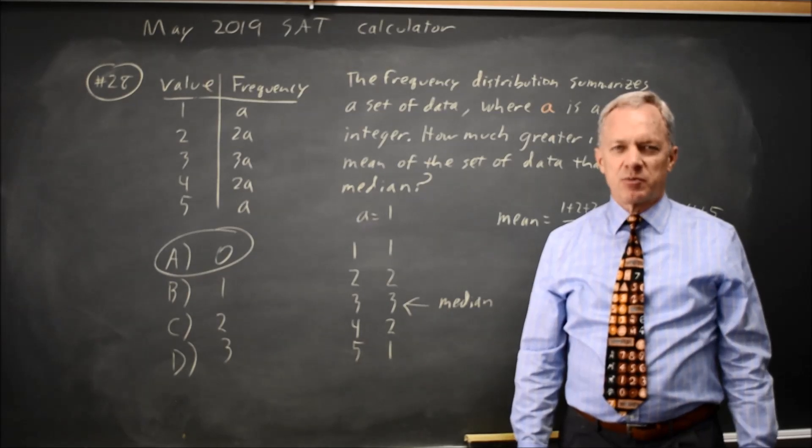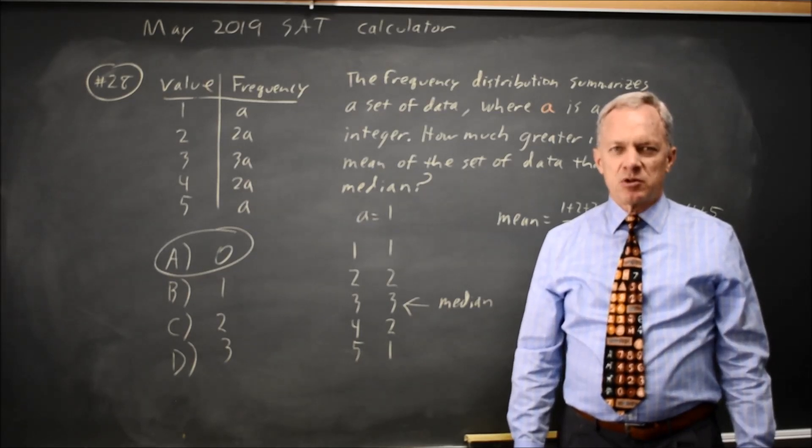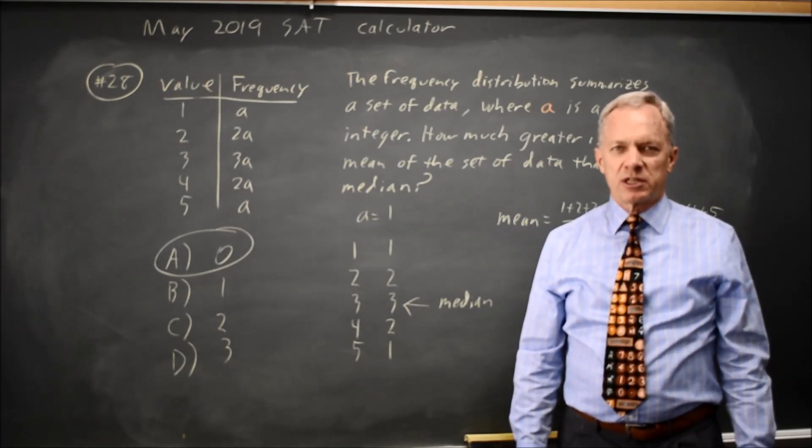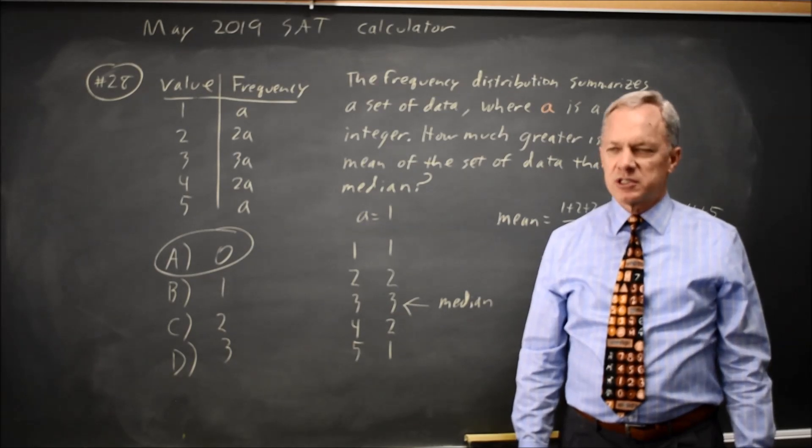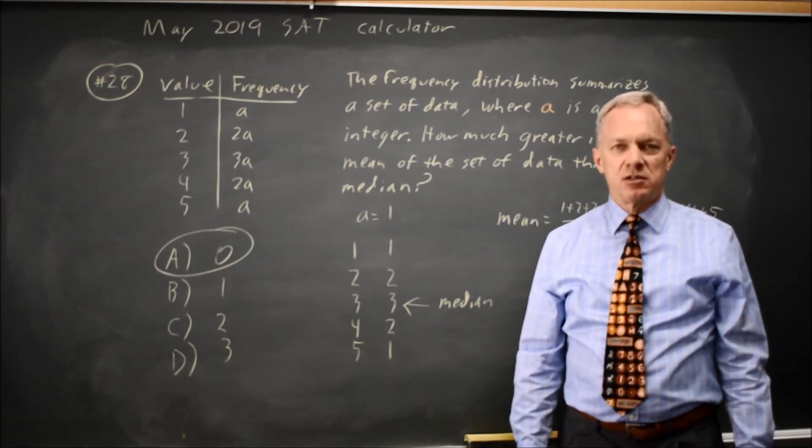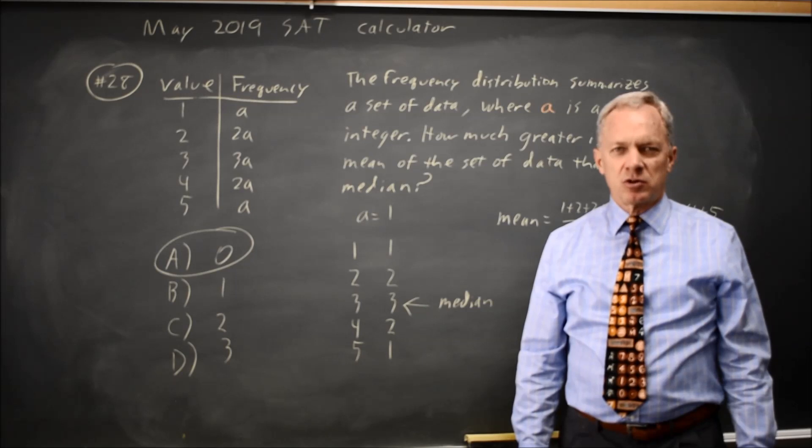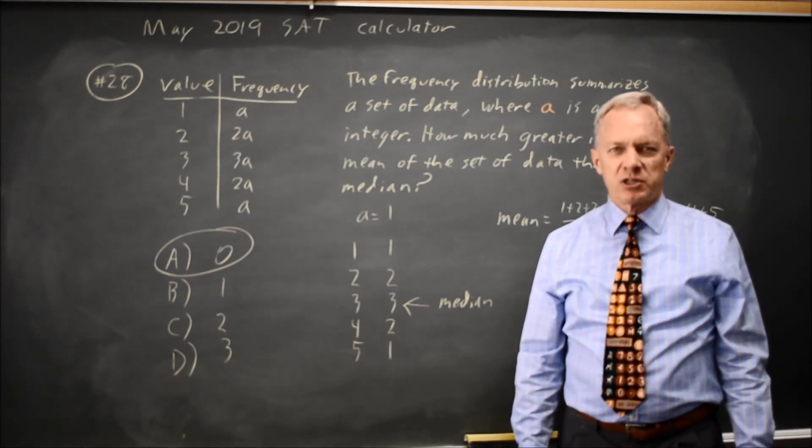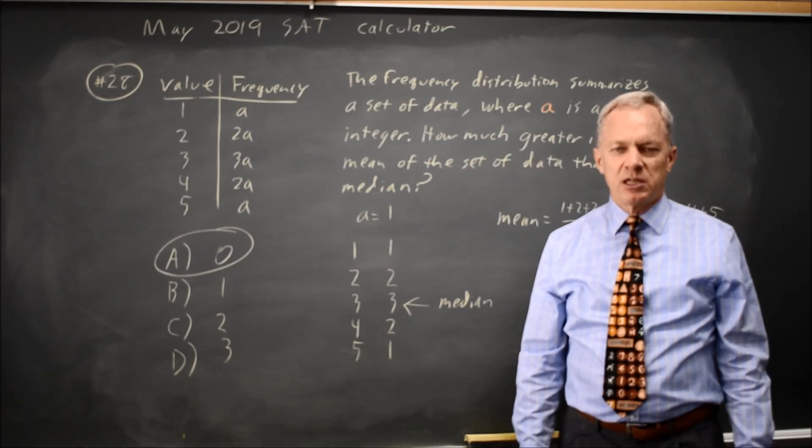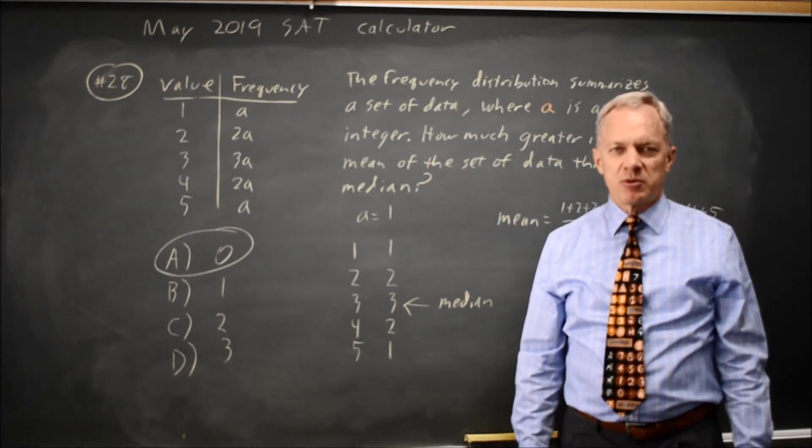College Board loves to ask about the mean and median, so make sure that you're comfortable with them and can quickly find the differences. If your data set is skewed with outliers or extreme observations in one direction, mean will be pulled in the direction of the skew for the median. If your data set is symmetric, they'll be equal.